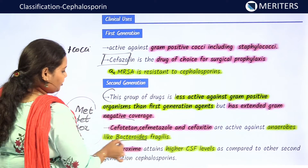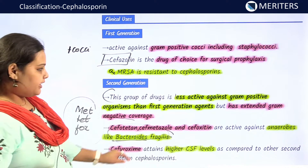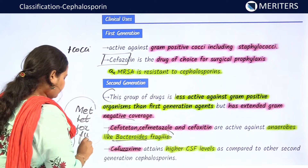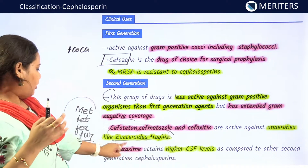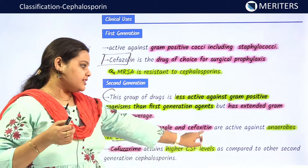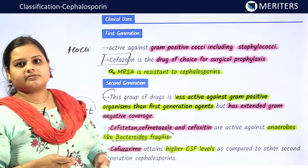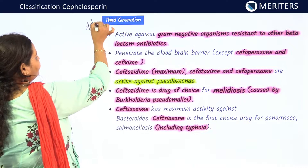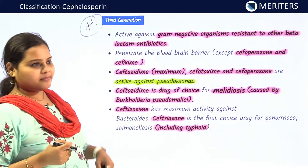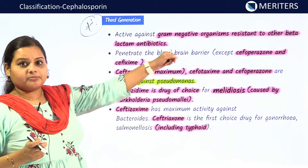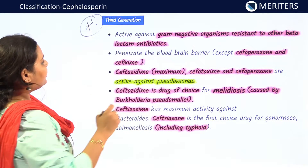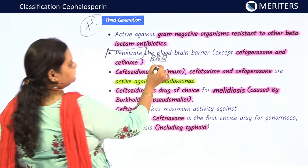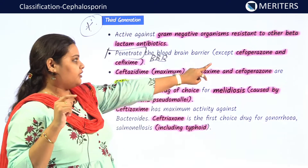Anaerobes are very important because our gut flora is basically gram-negative anaerobes. Cefuroxime attains higher CSF levels compared to other second generation cephalosporins. Third generation is very important for exams — it is very active against gram-negative organisms resistant to other beta-lactam antibiotics, and an important feature is that it will penetrate the blood-brain barrier.